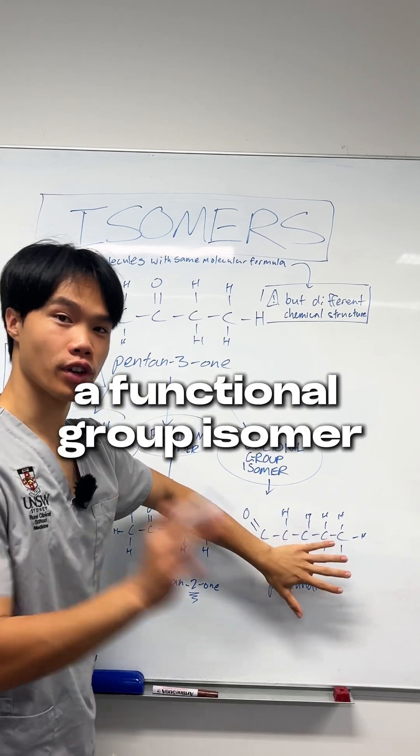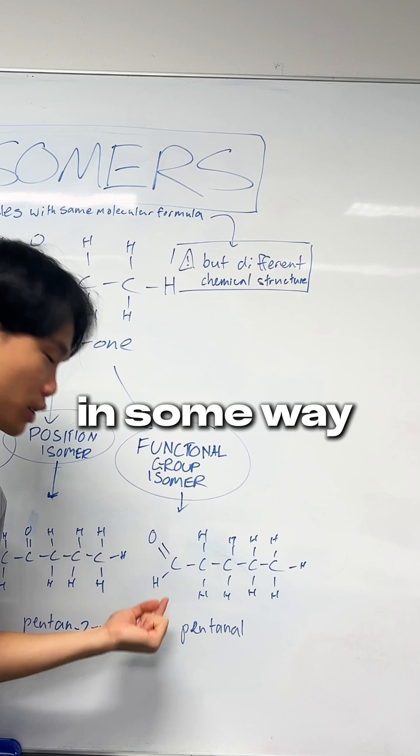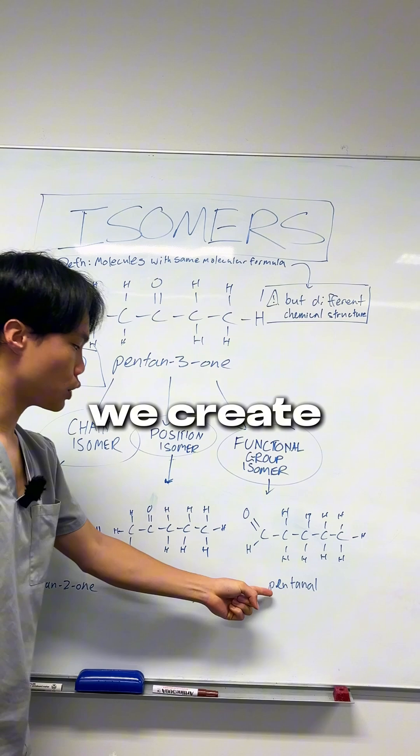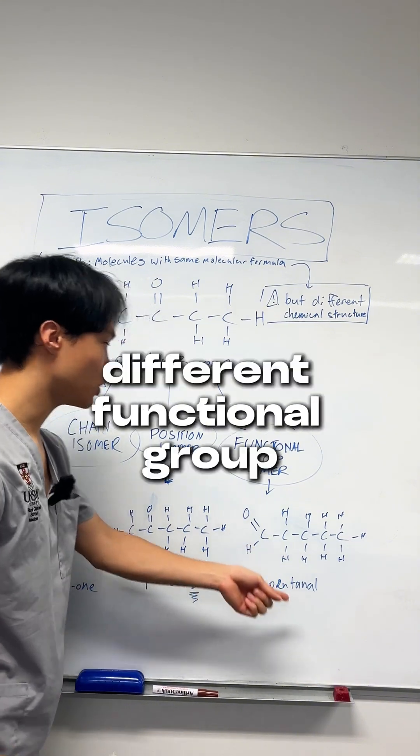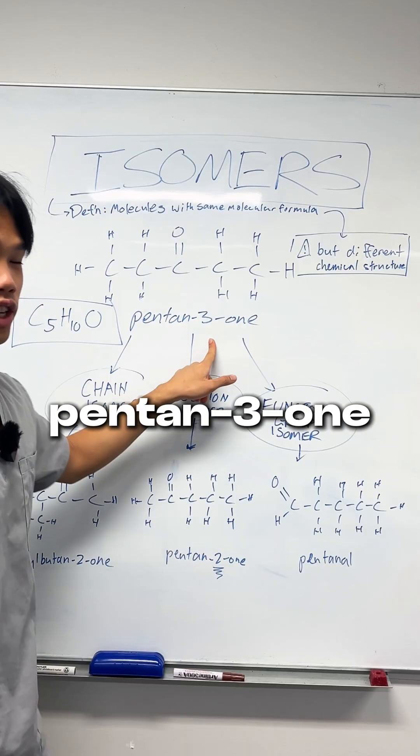The last type of isomer is a functional isomer, which is where you have the same molecular formula but you've rearranged the atoms in some way that you've created a new functional group. So when we move the carbonyl to the end of the chain, we create an aldehyde, which is of course a different functional group to a ketone. Hence, pentanal is the functional group isomer of pentan-3-one.